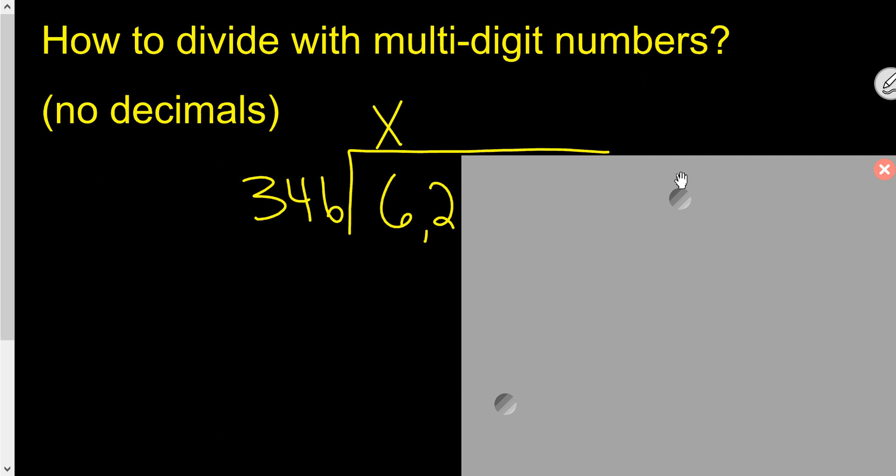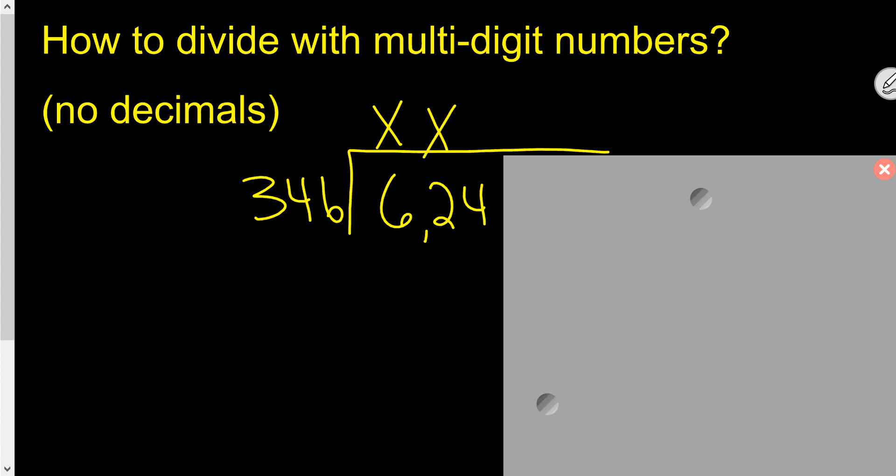Now, pull your paper a little bit more to the right, show the next number. Ignore this little comma right here and ask yourself, can 346 go into 62? And the answer is no. So I'll put another X, pull your paper back, and now we ask ourselves, can 346 go into 624?